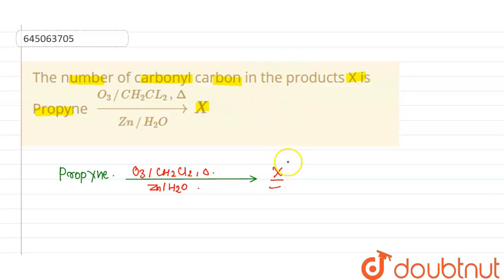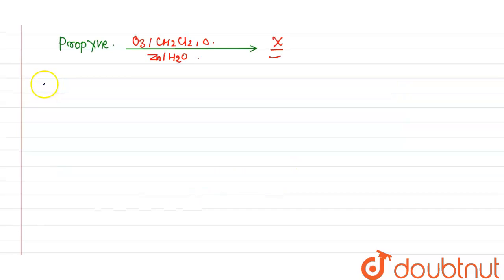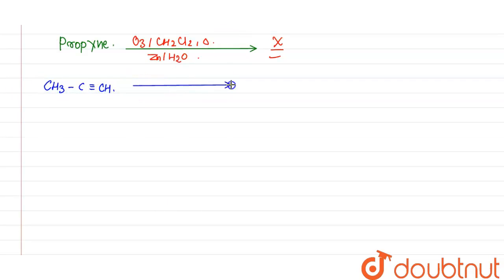So first let us draw the structure of propyne, which is CH3-C≡CH. Now first it will undergo ozonolysis. So during ozonolysis what happens is this bond will break here